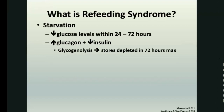Moving on to refeeding syndrome — is anyone familiar with the term and concept and how it works? There was a correct answer: it involves shifts in electrolytes, especially phosphate. Phosphate is the surrogate marker for refeeding syndrome.